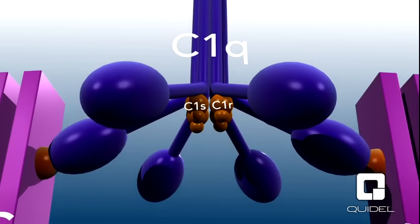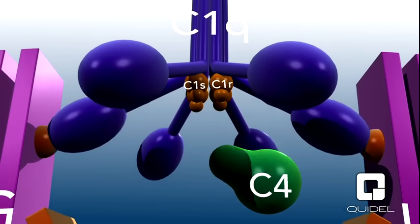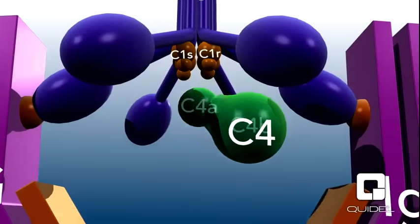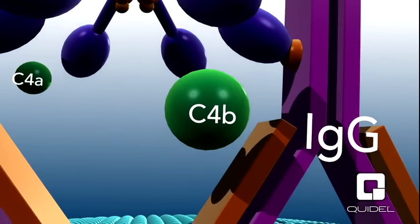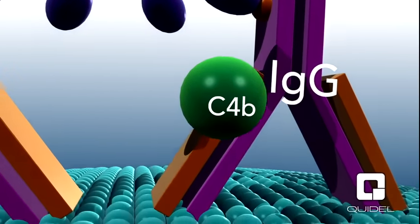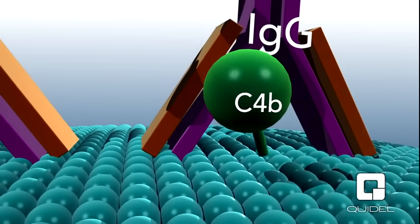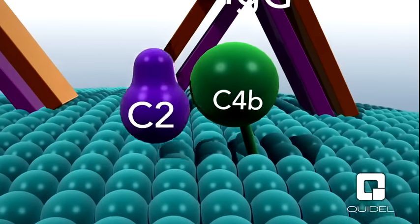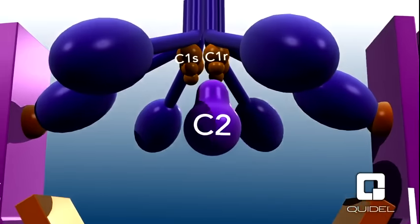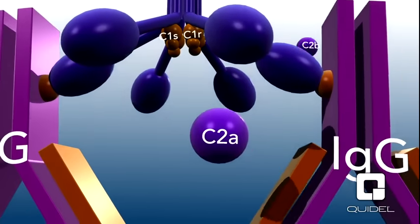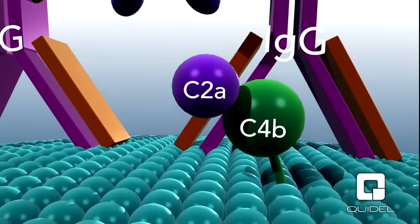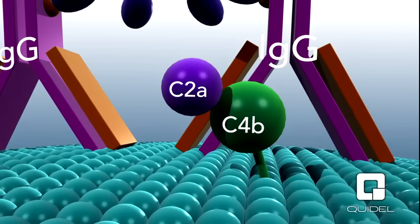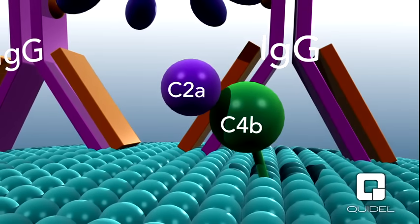The next step in the activation of the classical pathway is the cleavage of C4 by the activated C1 molecule. C4 is cleaved by activated C1s into two proteolytic fragments: a small peptide called C4a and a larger fragment, C4b. C4b attaches covalently to the antigen-antibody complex and has a binding site for C2, the next protein cleaved in the classical pathway. C2 is also cleaved into two fragments, and the resulting C2a fragment binds to C4b. This bimolecular complex of C4b2a is the C3 convertase of the classical pathway, with enzymatic activity residing in the C2a portion.